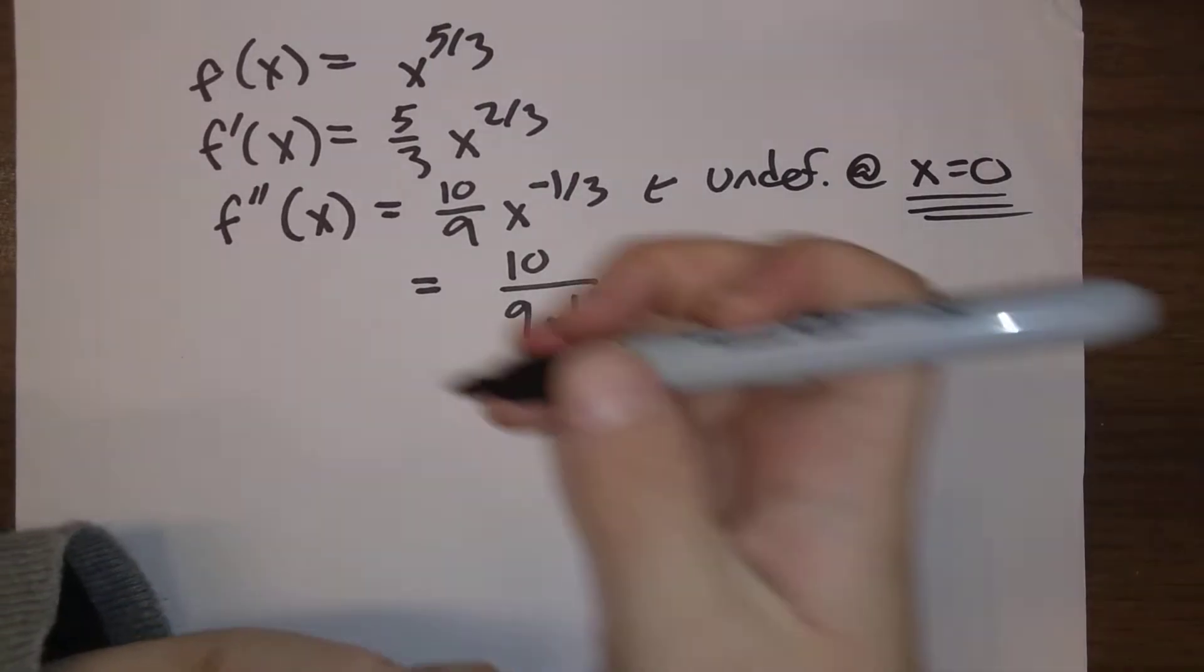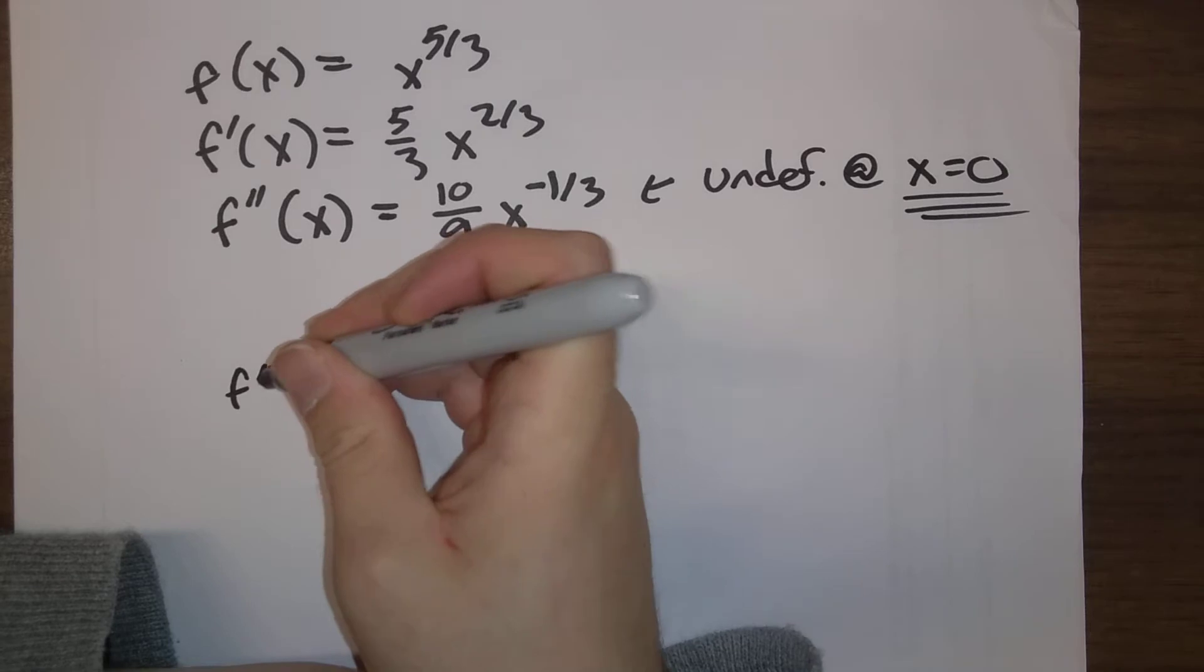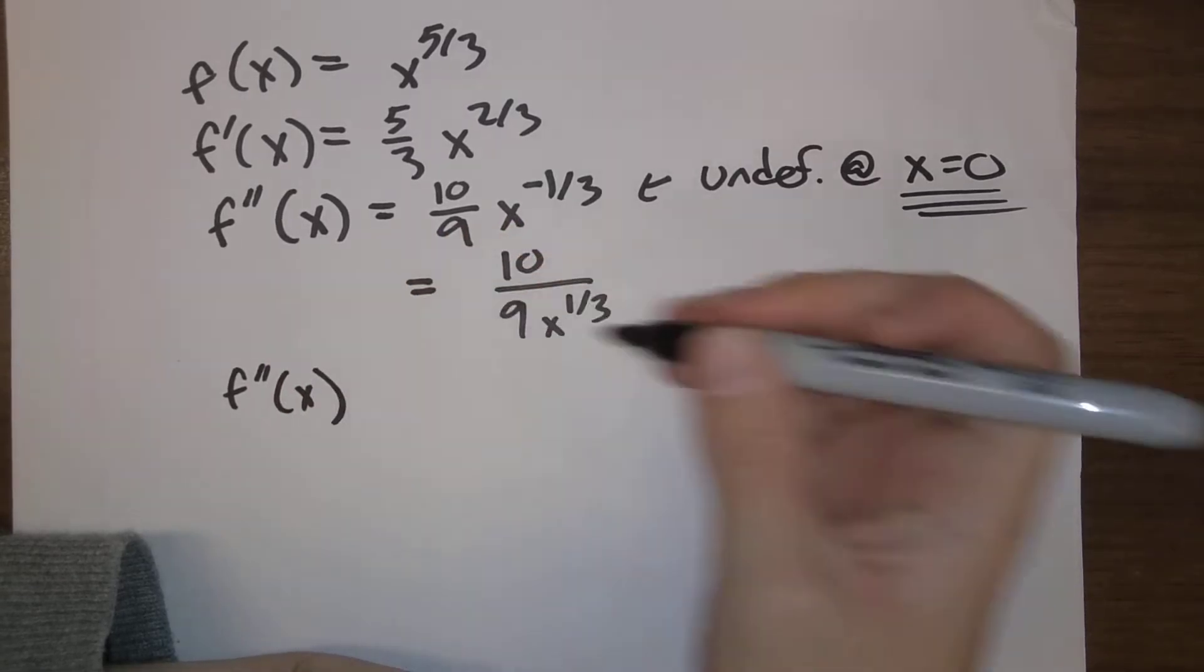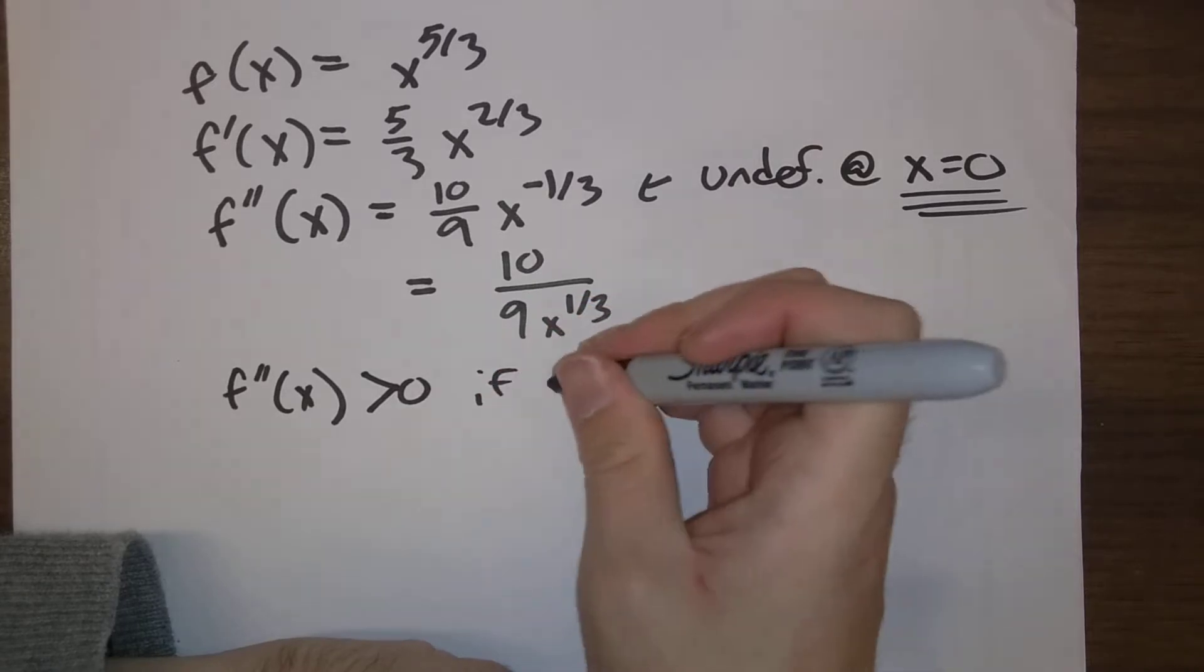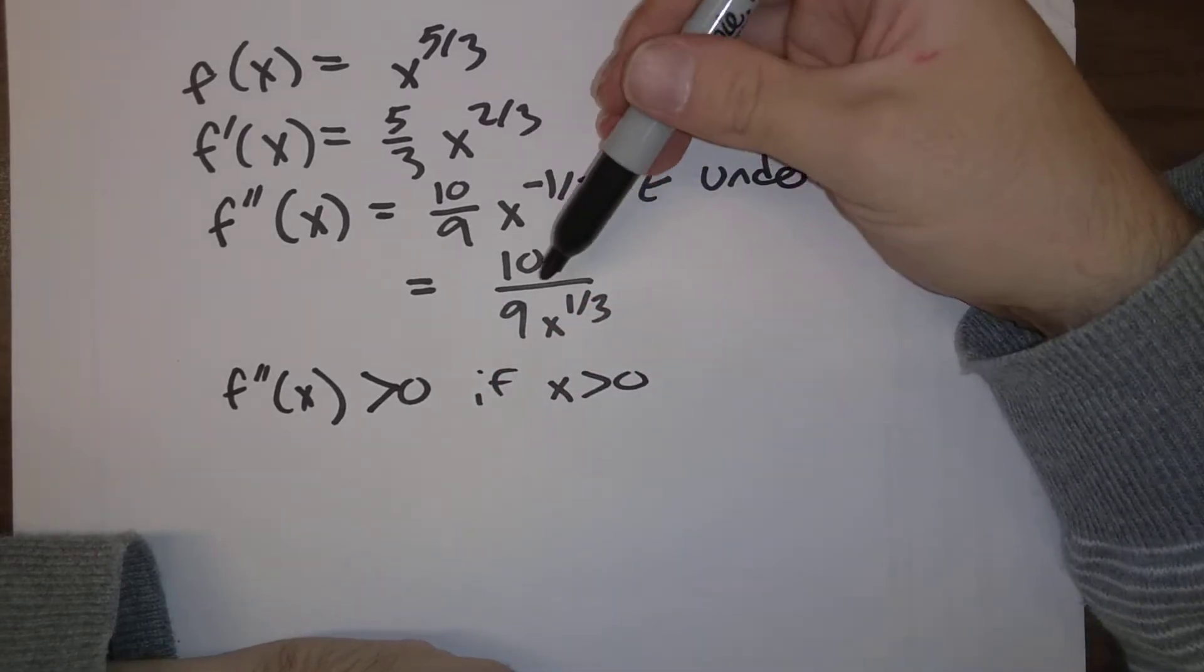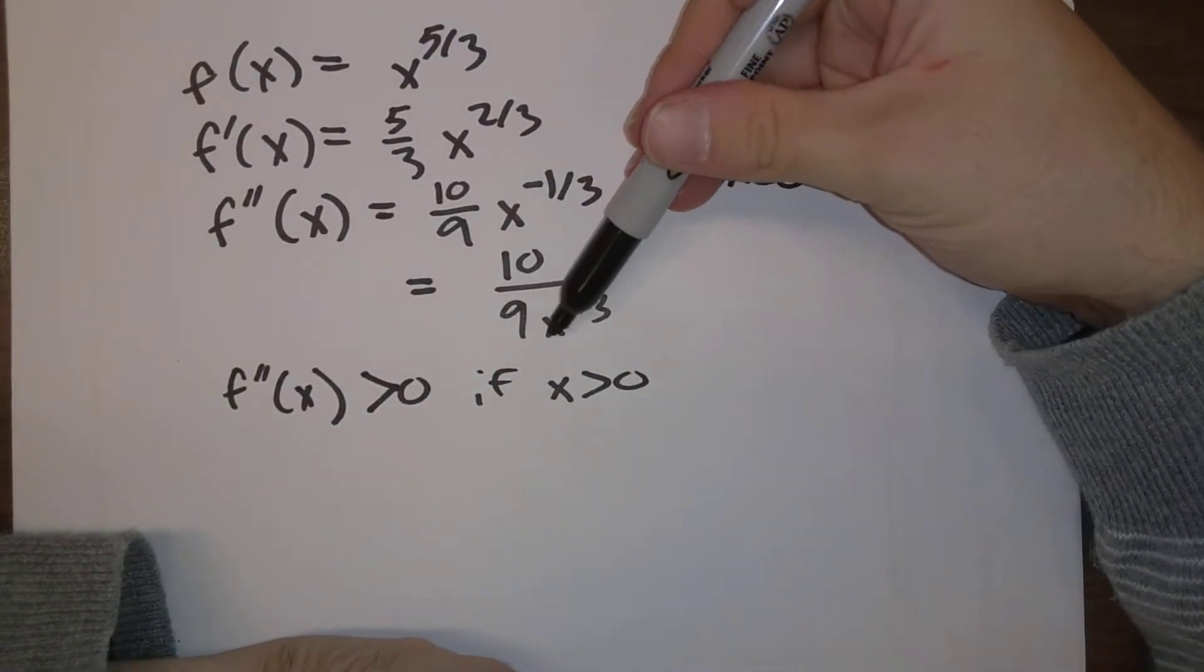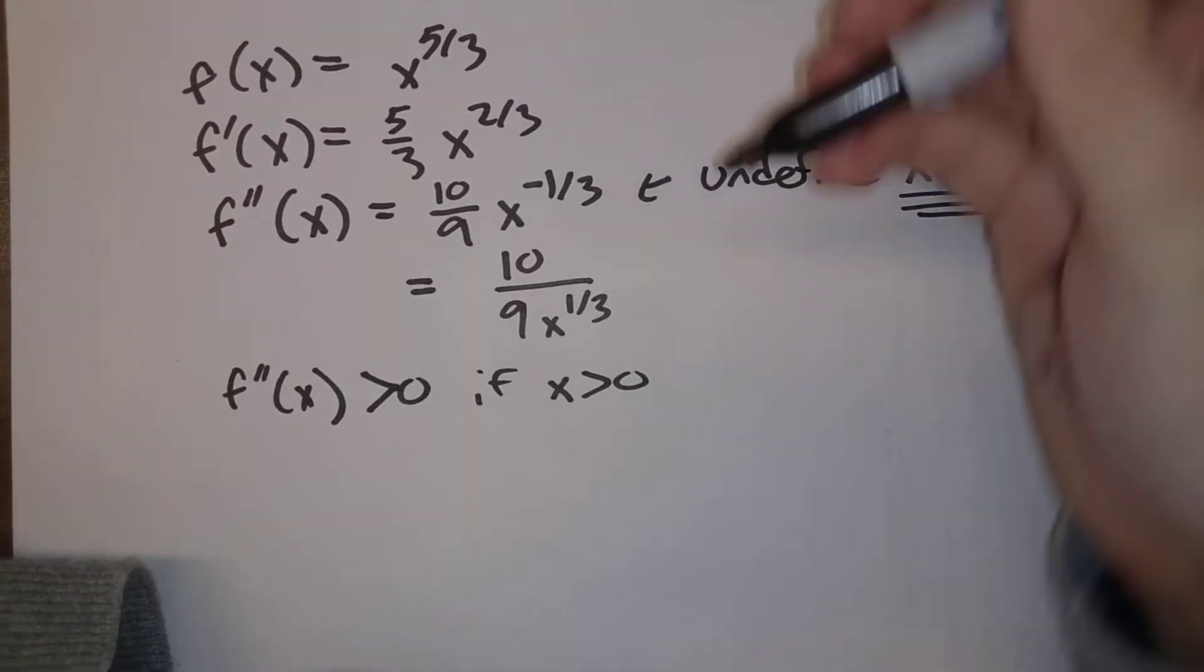And if we think about it, f double prime of x is going to be positive if x is positive. Plug positive numbers into ten over nine x to the one-third. That's going to be positive.